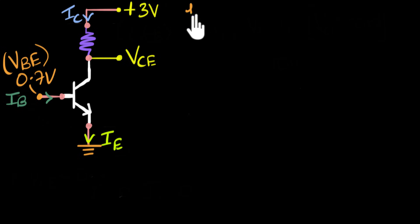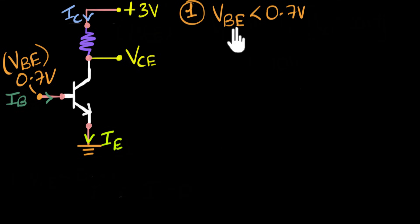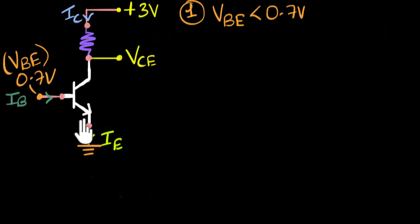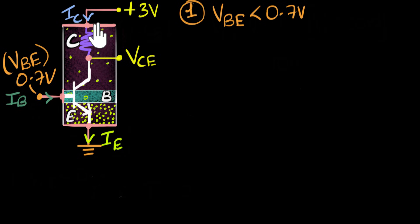The first case we are going to talk about is when VBE is less than 0.7V. Now in reality there is going to be another resistor here as well, but that's not going to affect our understanding, so I've just neglected that resistance. If VBE is less than 0.7V, we've already seen from input characteristics that if this voltage is less than 0.7V, then the base-emitter is not properly forward biased. As a result, this depletion region doesn't reduce, electrons get hardly injected into the base, and the base current is almost zero. Since hardly any electrons are getting injected, hardly any electrons are getting collected either, so even the collector current goes to zero.